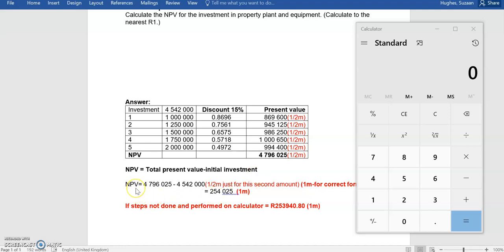Our net present value, that's what we're trying to calculate, is equal to the total present value of the project. That's the number that we just calculated by way of adding up all the present value cash flows of our project over the five years, so our 4.7 million.